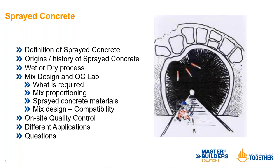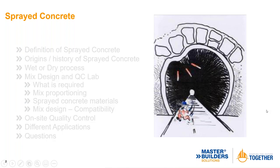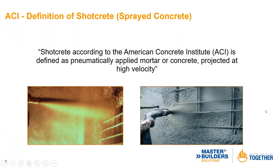To start off, here are the topics we'll be looking at today: definition, some of the origins or history, wet versus dry process, mix design and QC considerations, on-site quality control, different applications, references, and then questions. The ACI definition of shotcrete — according to the American Concrete Institute — is defined as pneumatically applied mortar or concrete projected at high velocity.